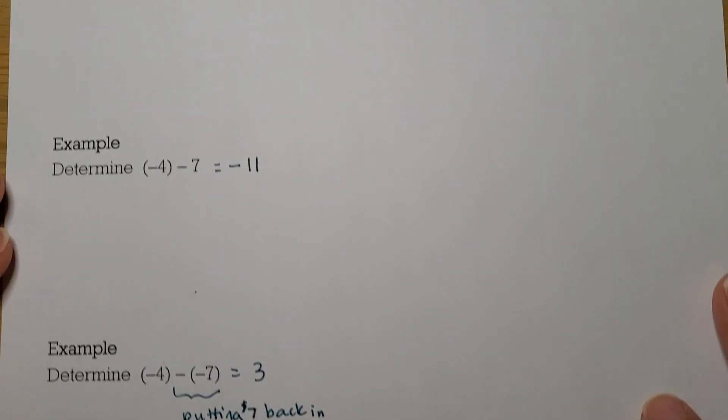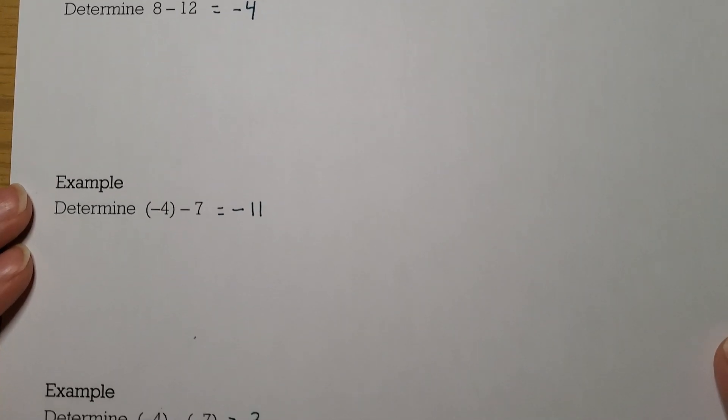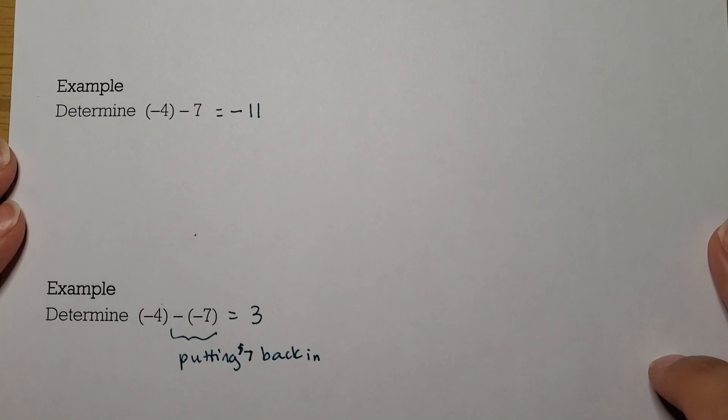All right, so that's going to wrap it up for this example of subtracting integers using terms of money. In the next video, we're going to see what happens with the battle between the circles and squares when we go to subtract. So that will be another way of thinking about it. So I hope you found this helpful, and I will see you next time. Bye!